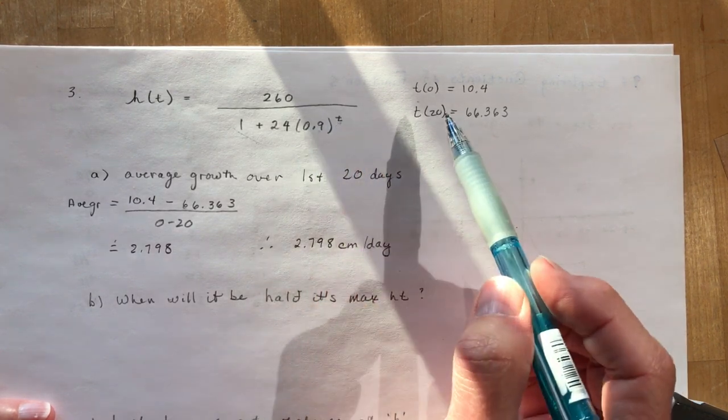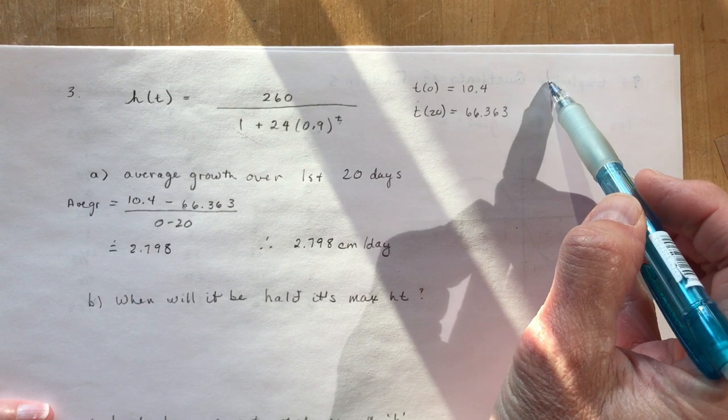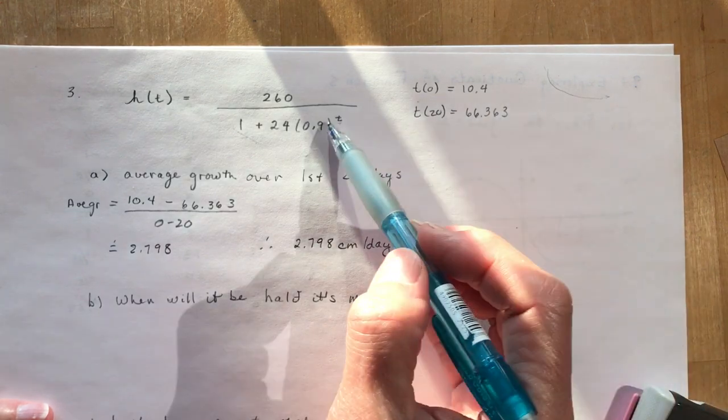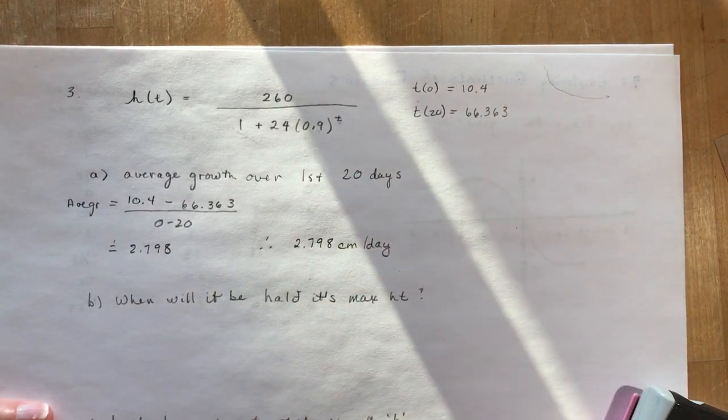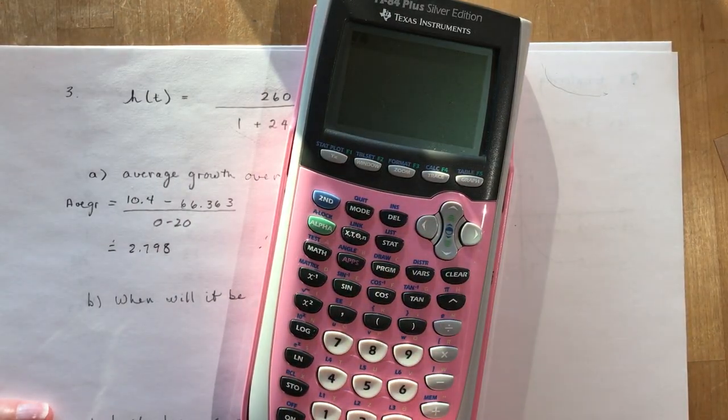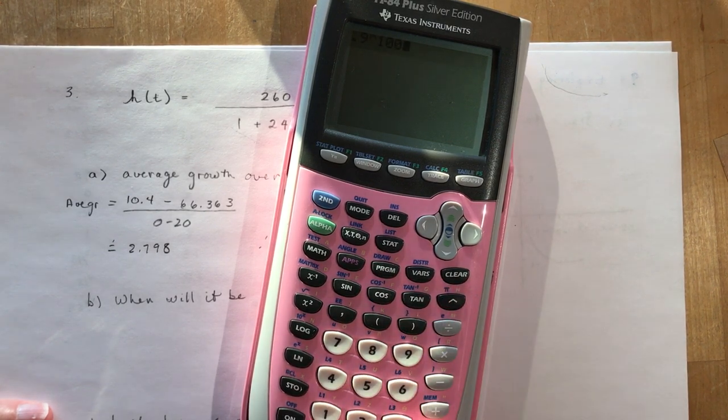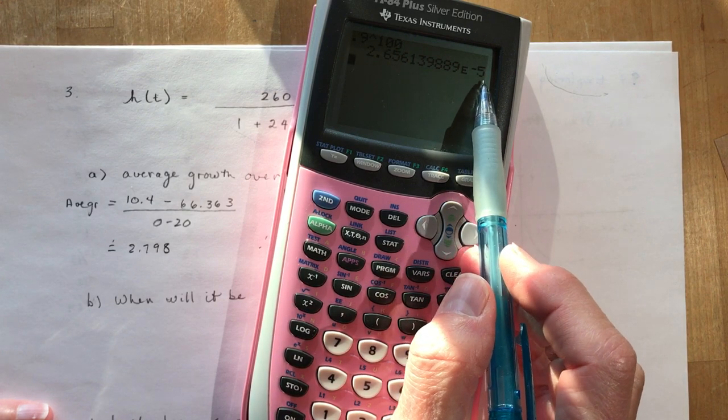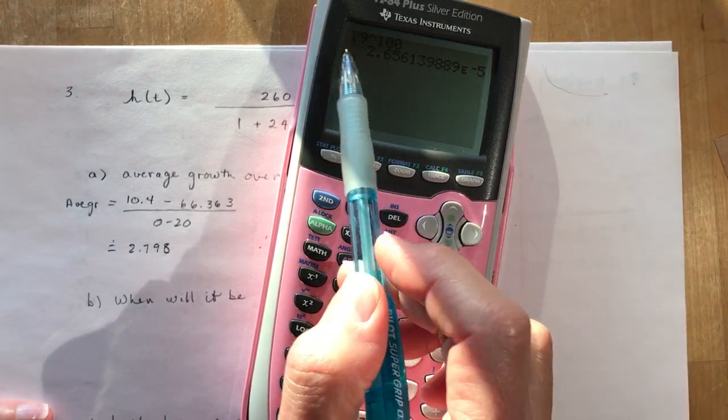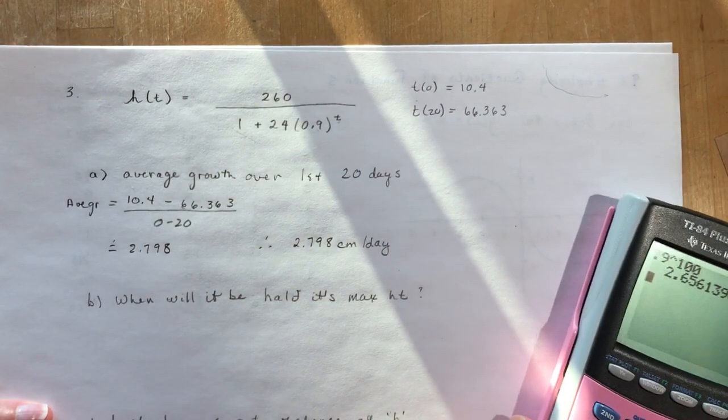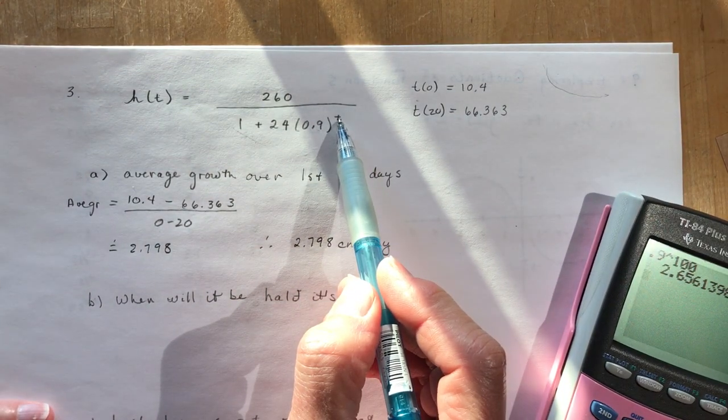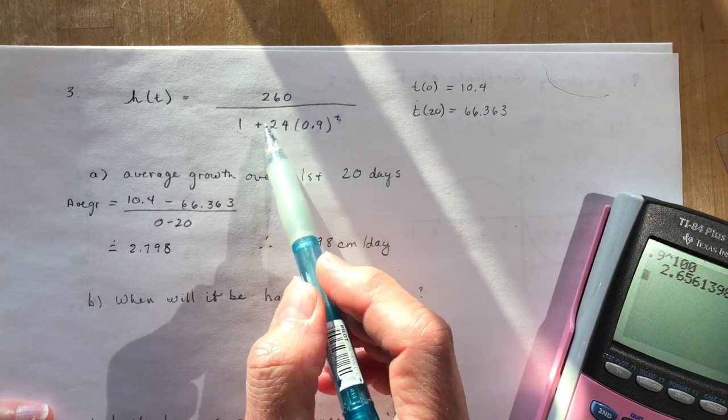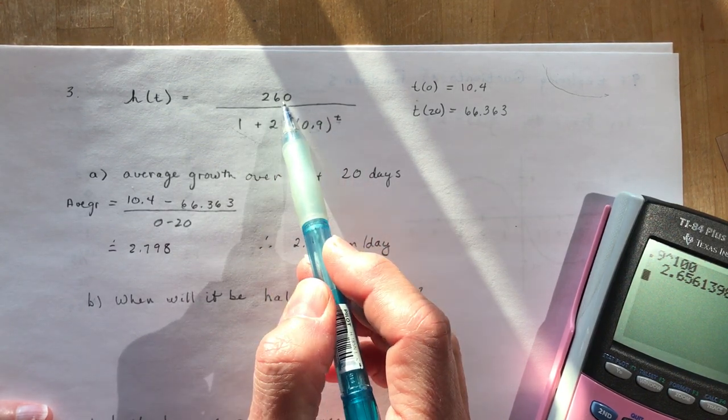As t gets big, what happens to 0.9? If you did a graph of 0.9 to the power of t, you would have a function that comes down like this—it's going to approach 0 because it's a decay graph. Remember when you do 0.9—let me just show you here for a second—if I do 0.9 to the power of 100, look, I get 2.6561 times 10 to the negative 5, so you have to move the decimal way over. So I'm approaching 0 as this gets really big. So if this becomes 0, then 24 times 0 is 0, and my maximum height would be 260.